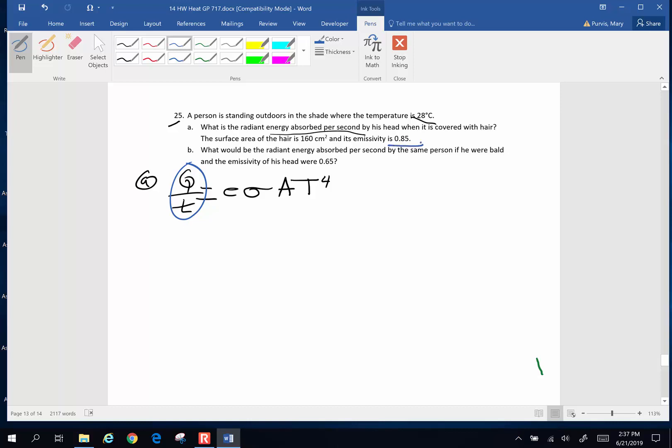Emissivity is 0.85. Change in temperature, so the temperature is 28 Celsius and in order to use this equation you must be in Kelvin. So add 273 to this to get Kelvin and that when I do the math that looks a lot like 301 Kelvin.